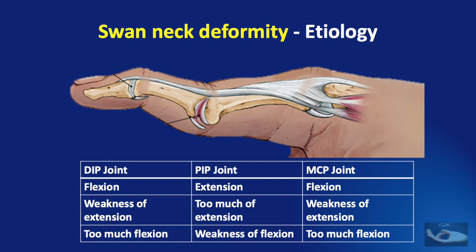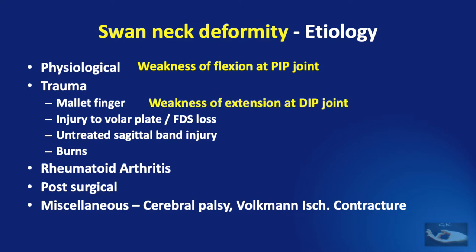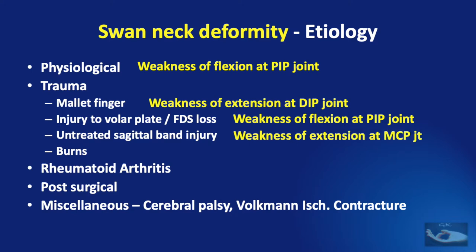With this insight, let us see the mechanism causing the swan neck deformity in the different etiologies. In physiological swan neck deformity, it is the weakness of flexion power at the proximal interphalangeal joint due to congenital volar plate laxity. In mallet finger injury, it is weakness of extension at the distal interphalangeal joint that starts the process. When there is injury to the volar plate or flexor digitorum superficialis loss, the mechanism is weakness of flexion at the proximal interphalangeal joint. In untreated sagittal band injury it is weakness of extension at the metacarpophalangeal joint.